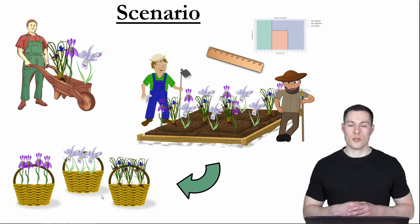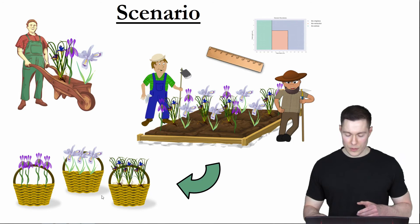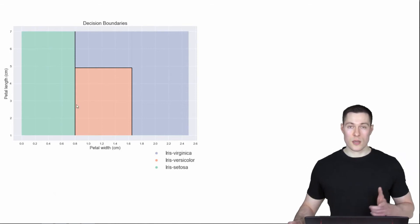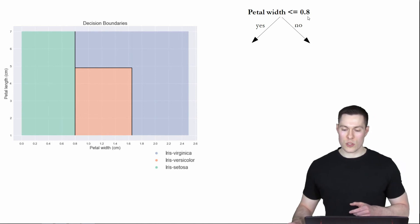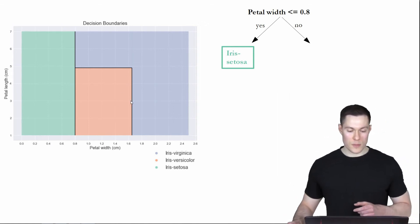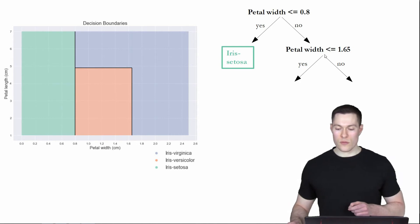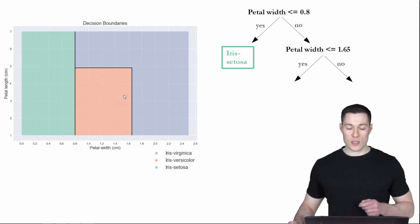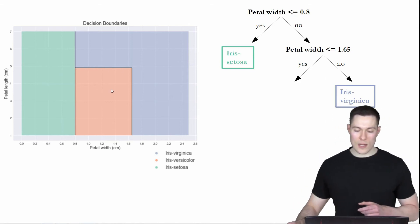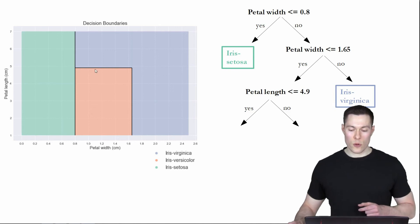We solved the same problem as in the previous video, but this time without any machine learning. As it turns out, what we did in this video is exactly how the decision tree algorithm works. We can even illustrate those decision boundaries as a decision tree. The first decision boundary asks: is the petal width smaller or equal to 0.8? If yes, the flower is an iris setosa. If no, we check the next boundary: is the petal width smaller or equal to 1.65? If it is not smaller, then the flower is an iris virginica.